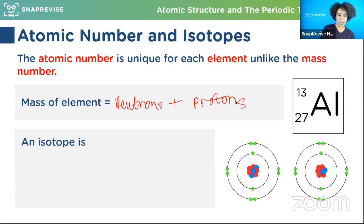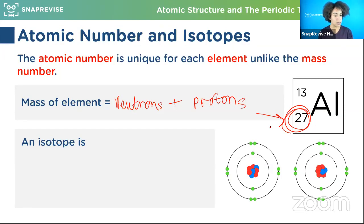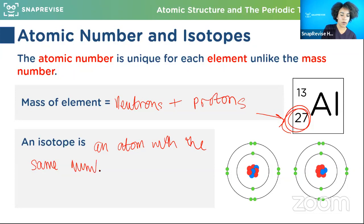That is this number here - 27. Does anyone remember what an isotope is? An atom from the same element with a different number of neutrons - yes! So an isotope is something that has the same number of protons but a different number of neutrons. An atom with the same number of protons but a different number of neutrons.